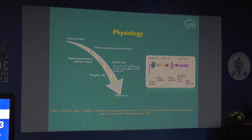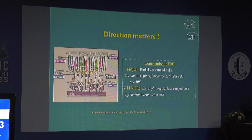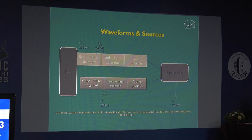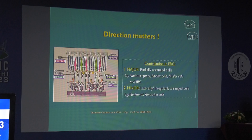It's important to understand that signal transmission is not a simple relay from A to cortex — the inner retina is a processing machinery. Direction also matters: the retina is highly organized, and cells that are radially arranged where light directly falls contribute maximally to electrophysiology. Horizontal cells contribute less. In diseases where cells are displaced from their normal orientation, the recorded signal will be reduced.